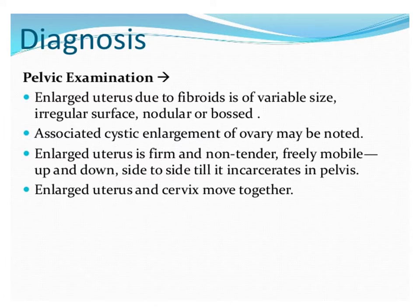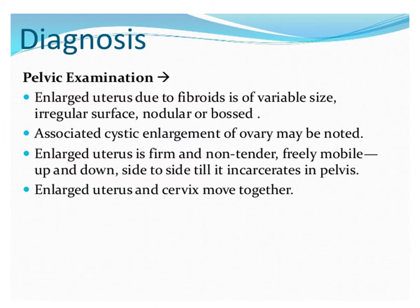Diagnosis can be confirmed by abdominal and pelvic examination. On abdominal examination, if the fibroid size is more than 12 weeks of pregnancy size, it is above the pubic surface and will be palpable. Very large fibroids have been documented. A single large fibroid gives a smooth uterine contour, whereas multiple fibroids cause an irregular, nodular, or bossed appearance.